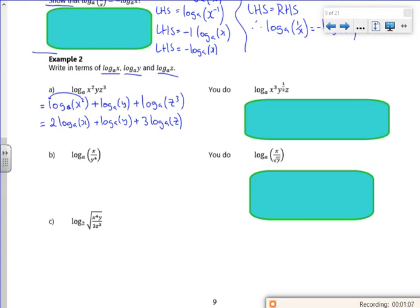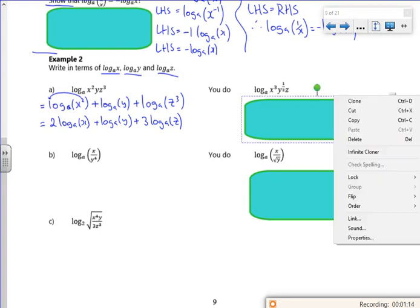You have a go at that one. You've got a log a of x cubed, you've got a log a of y to the half and you've got a log a of z. And then just put the powers at the front, that's all.